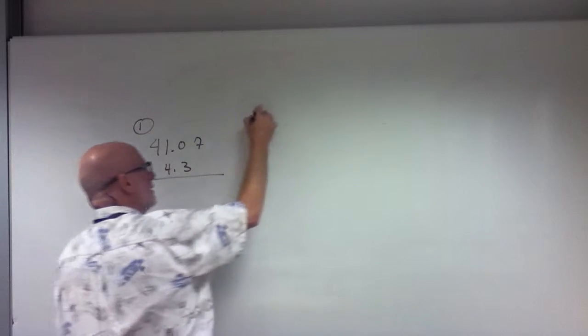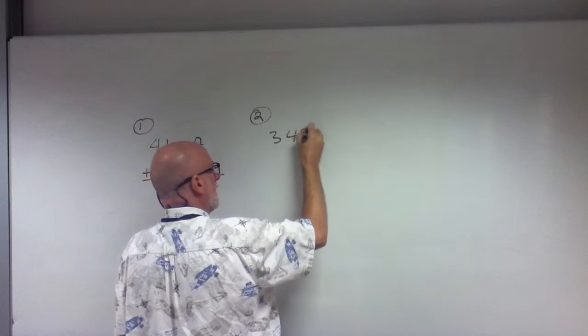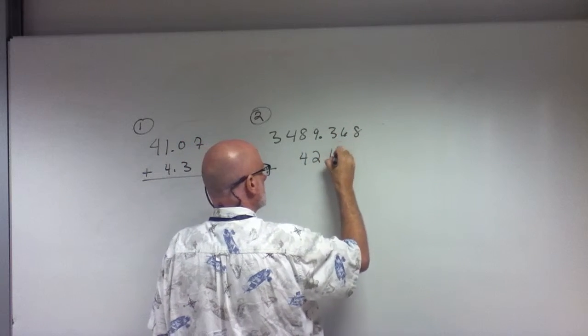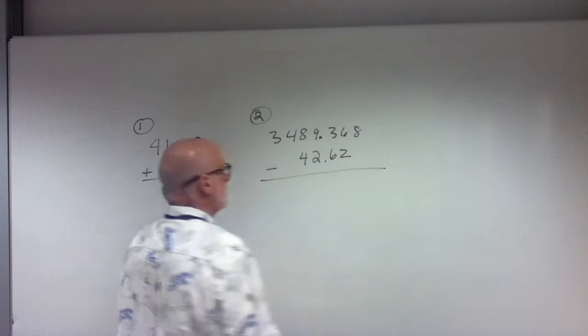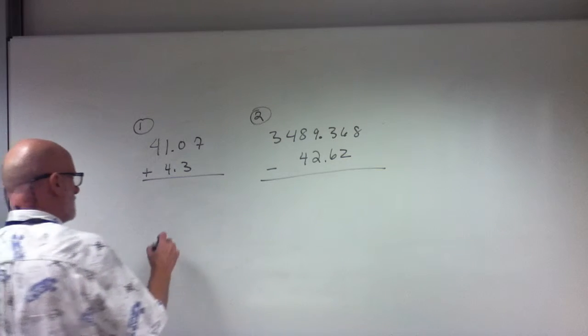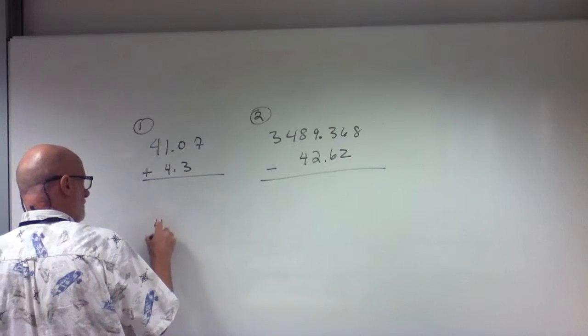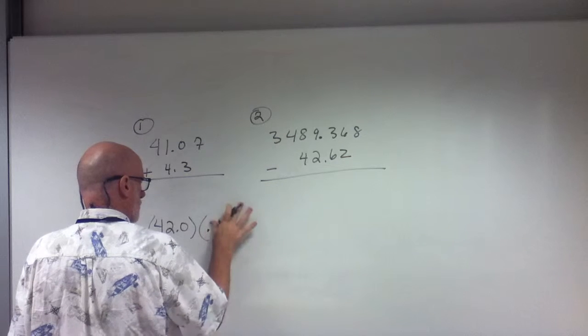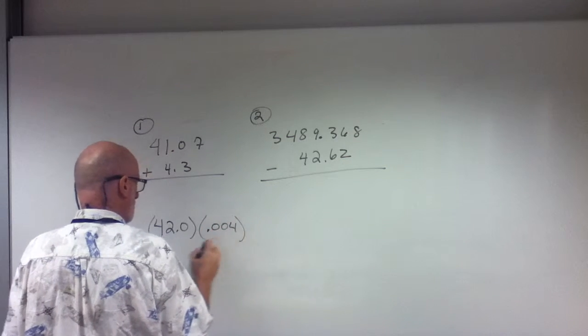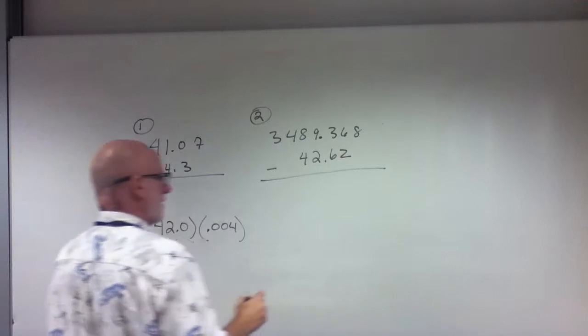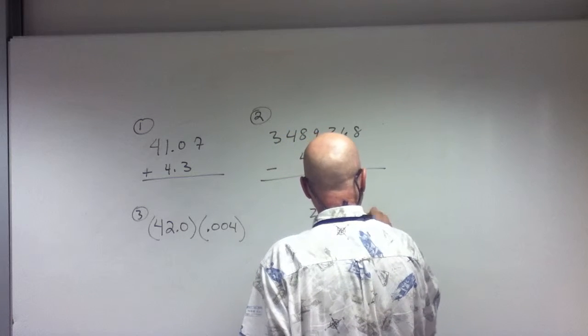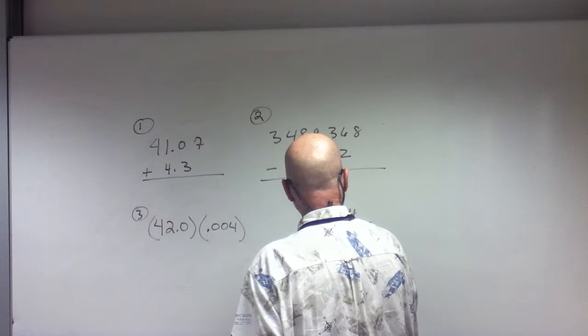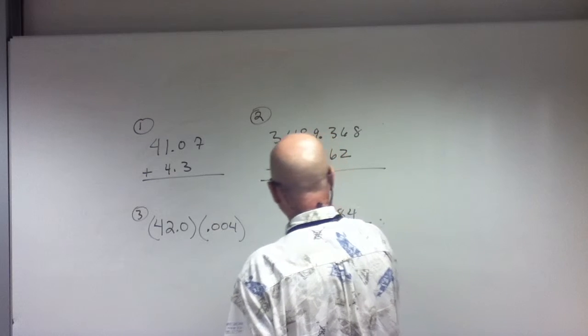Number 2, let's say we have 348.368 minus 42.62. How do you do that one? That's a subtraction. Let's do a multiplication where we have 42.0 times 0.004. That's going to be number 3.